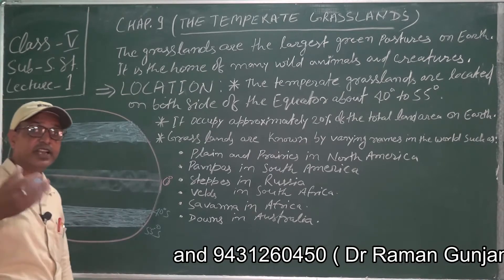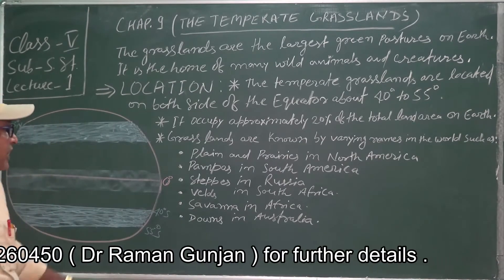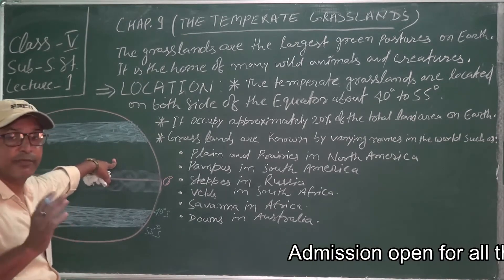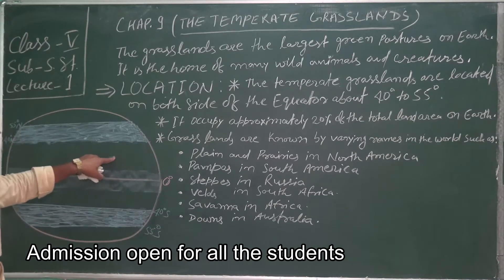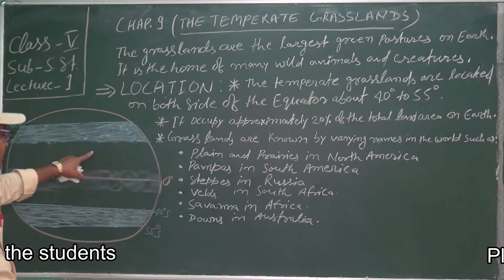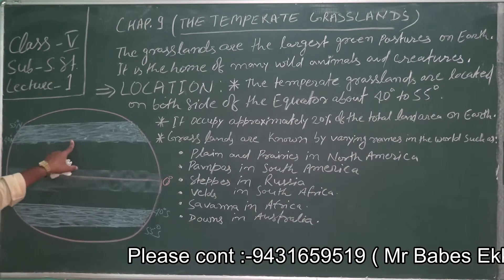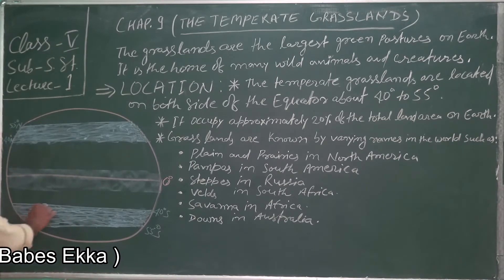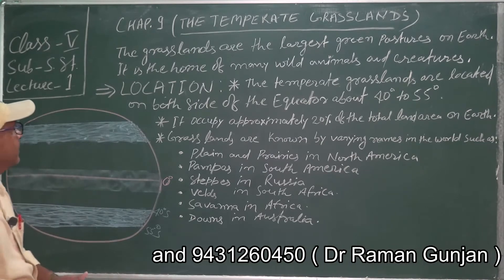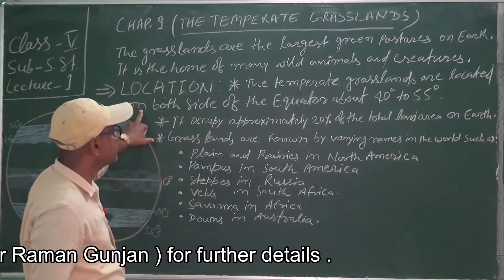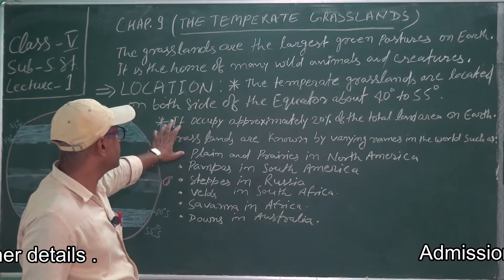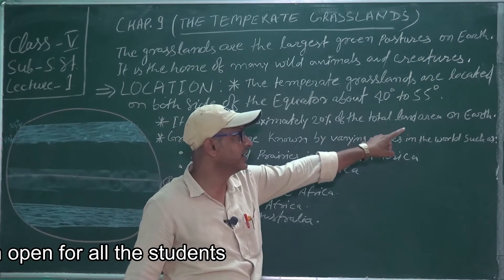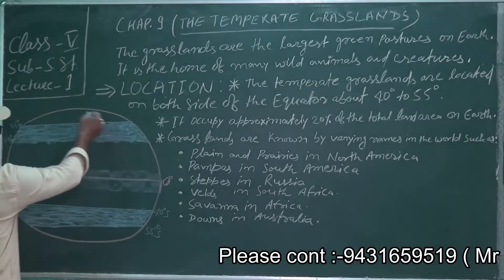As the name suggests — grassland — trees are rarely found here. The climate and rainfall favorable for trees are not available in these areas, so trees are absent or very rare. Temperate grasslands occupy approximately 20% of the total land area on earth.